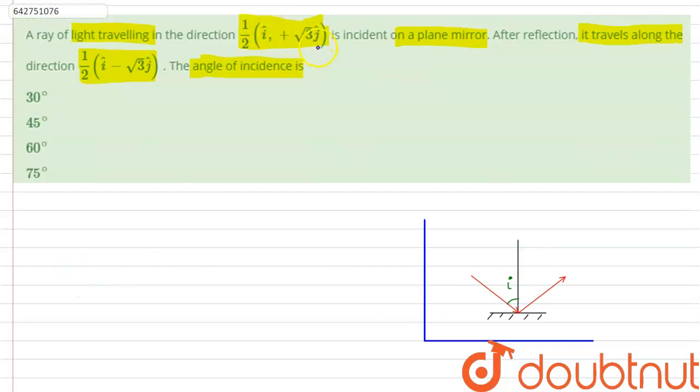This can be written as cos i equals (1/2) multiplied by i cap plus root 3 j cap dot j cap.